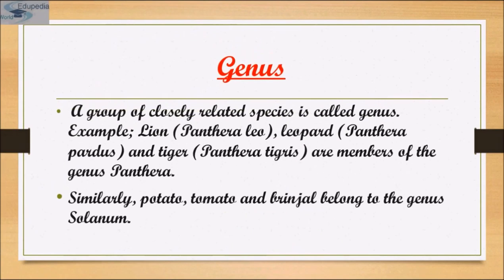Genus comprises a group of related species which have more characters in common compared to species of other genera — genera are aggregates of closely related species. For example, potato and brinjal are two different species but both belong to the genus Solanum. Lion (Panthera leo), leopard (Panthera pardus) and tiger (Panthera tigris) — with several common features — are all species of the genus Panthera.